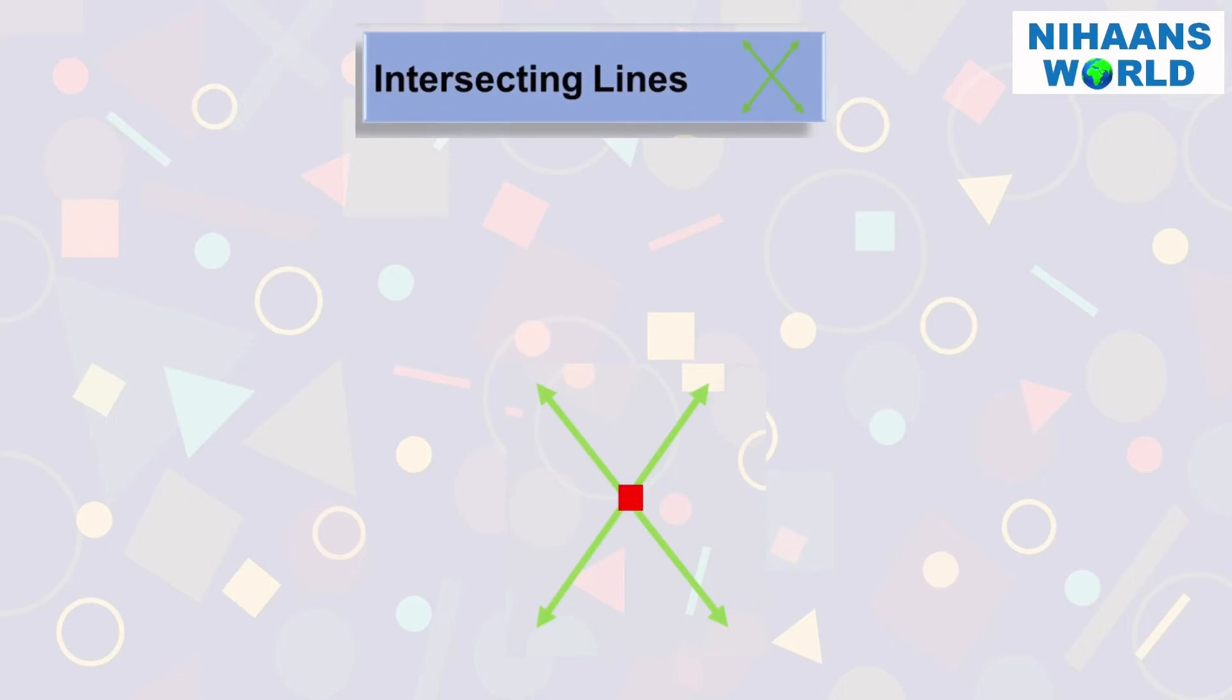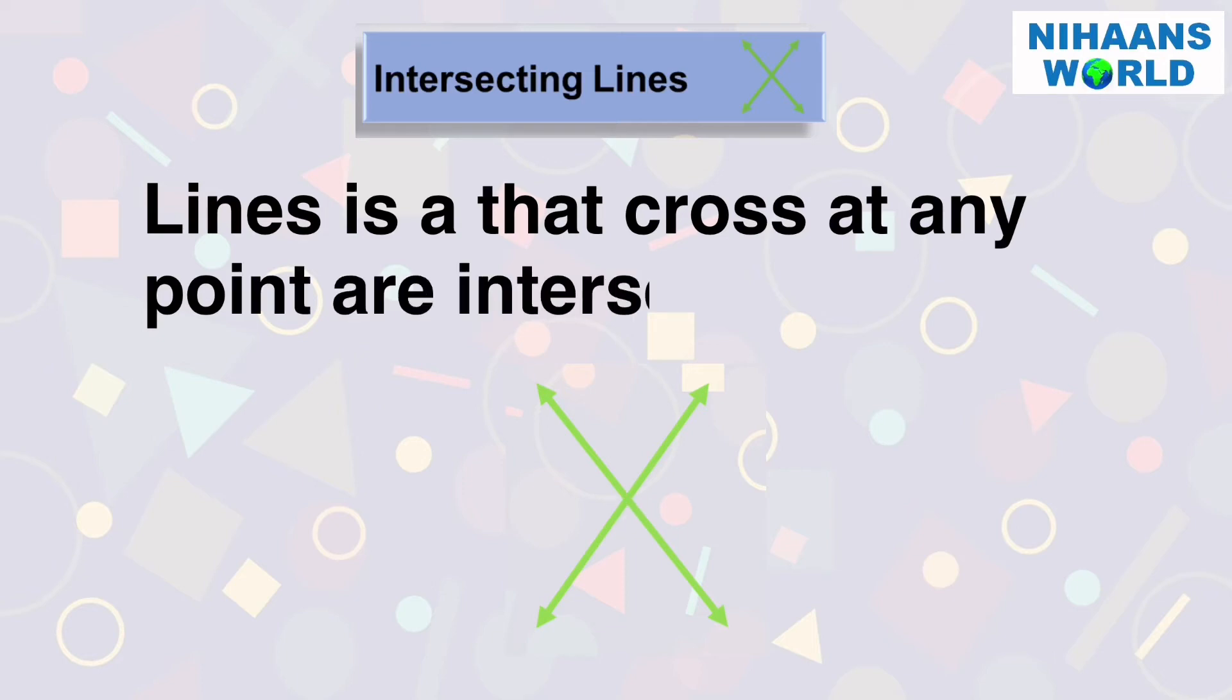What are intersecting lines? Intersecting lines are lines that cross at any point.